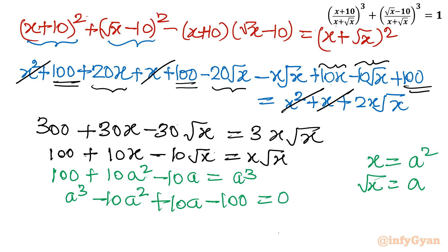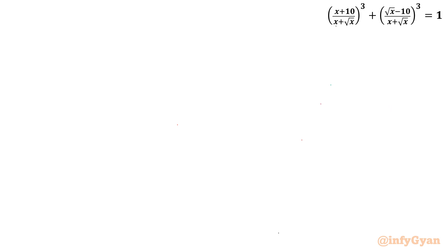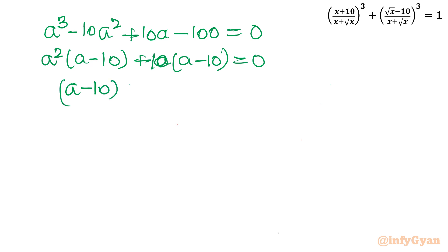Let us consider a² common from first two terms: a²(a-10) + 10(a-10) = 0. So (a-10) and (a²+10) will be the factorization.